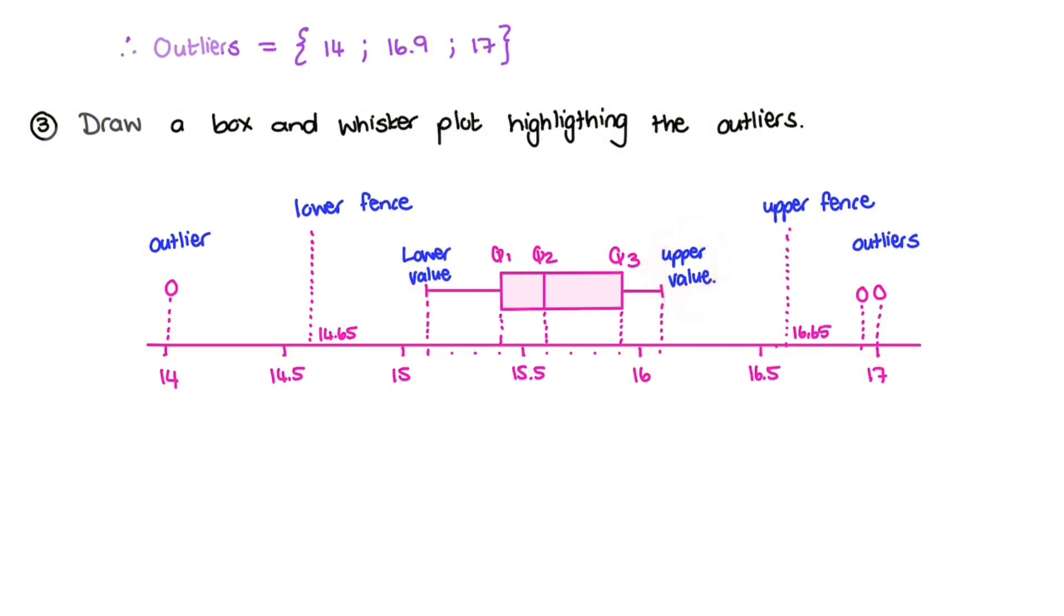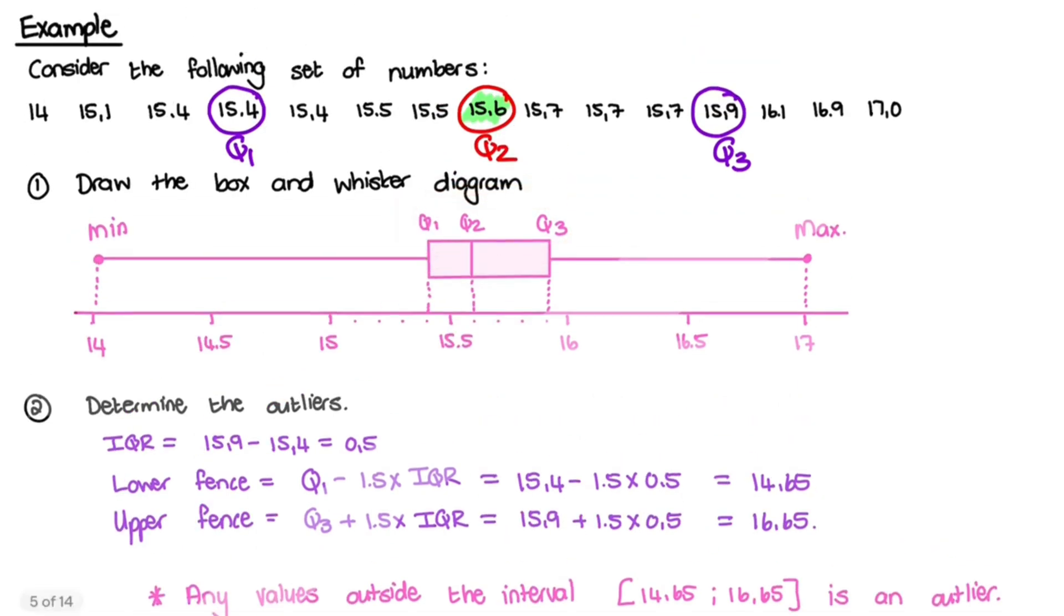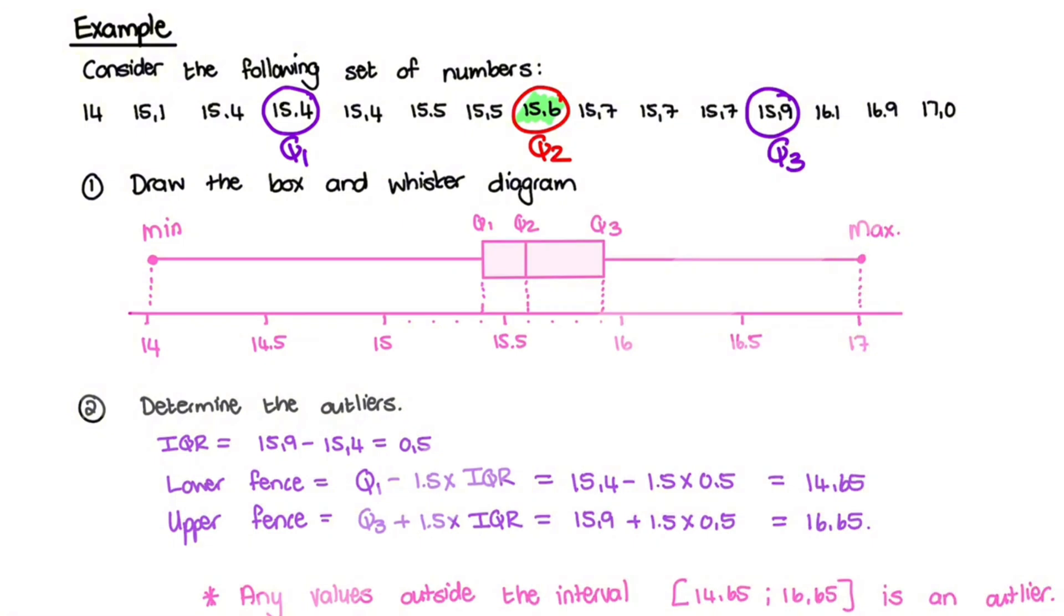And the important part when we plot this box and whisker diagram is that we do not make changes to this box right here. So the quartile 1, 2, and 3 is the same as quartile 1, 2, and 3 that we have identified in the original set of data. So all that we have done is we have identified the 14 and 16.9 and 17 as our outliers.